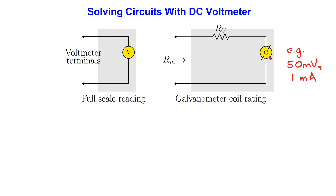Resistor Rv and the galvanometer form a voltage divider. Thus the voltage across the voltmeter must divide between the resistor Rv and the coil. The voltage drop across the coil, when the voltage across the voltmeter is at its full-scale value, must be at its maximum voltage rating. Thus the voltage drop across Rv is the full-scale voltage minus the coil voltage rating.